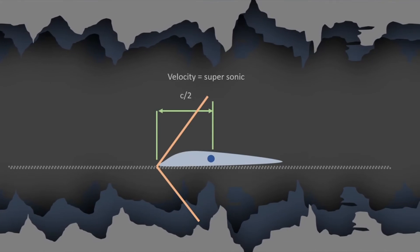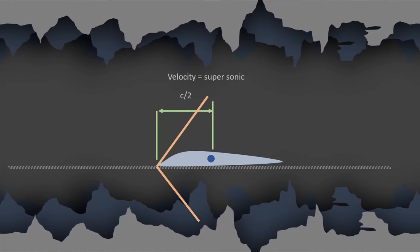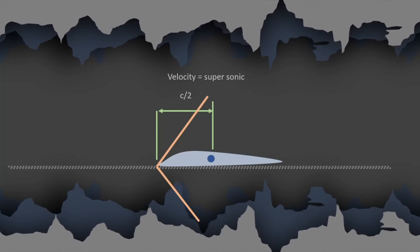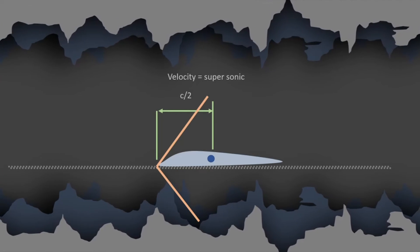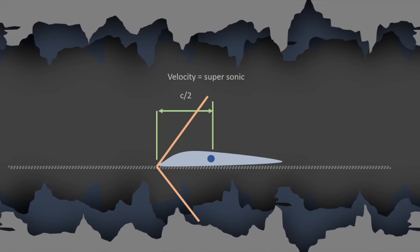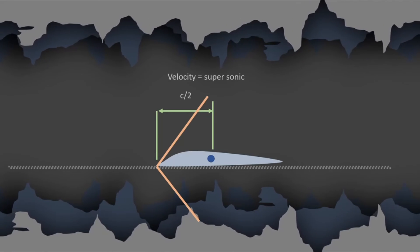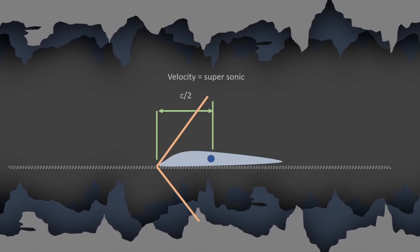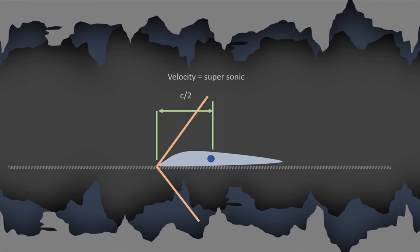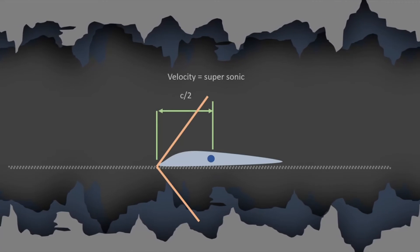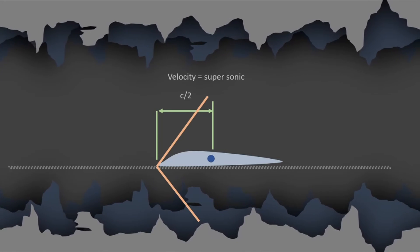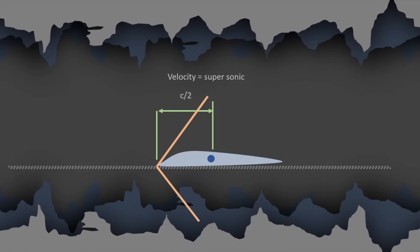For supersonic flows, the aerodynamic center is located at half of the chord. You will probably not be using this value directly if you are designing a supersonic aircraft — you are going to find the aerodynamic center using CFD or experimental methods — but I have mentioned it so you can use it if you want.